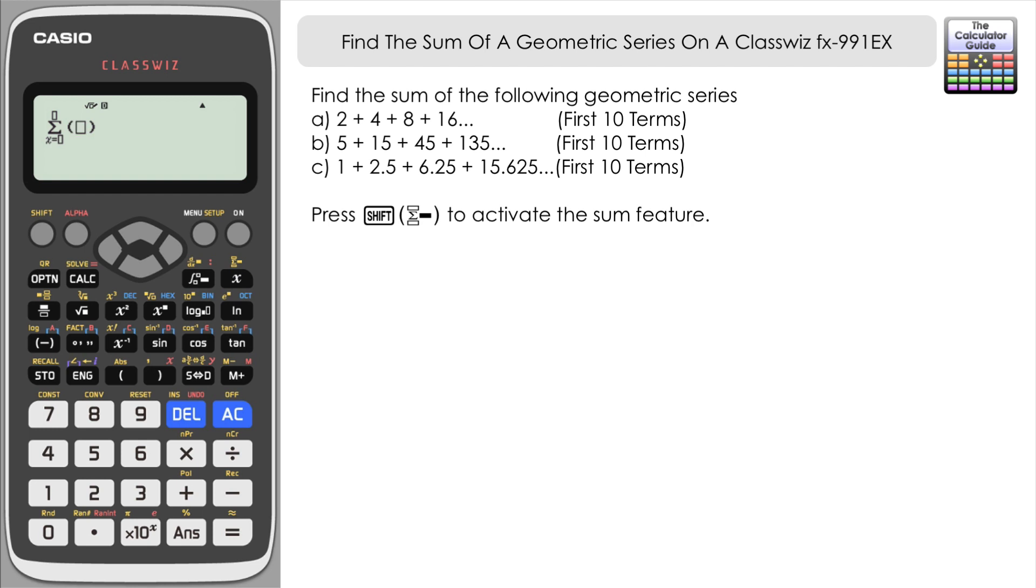We also need the equation for the nth term of a geometric series and that's given here. Un equals Ar to the power of n minus 1. Let's just define what those terms are. Un is a particular term in the series. A is going to be the first term of the series and R is the common ratio between each of the terms. N just refers to the particular term that you're looking for.